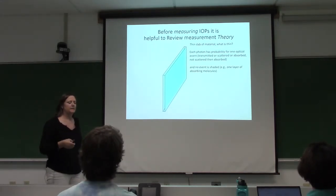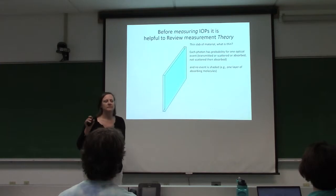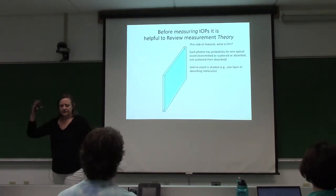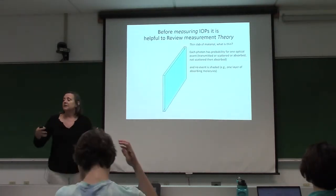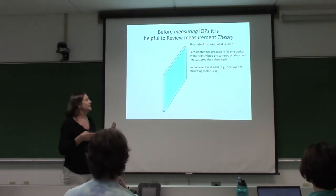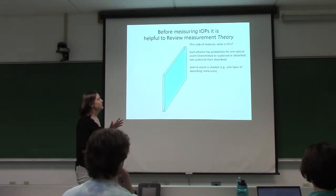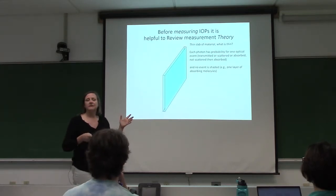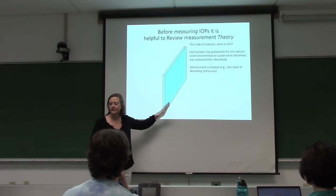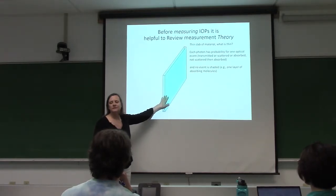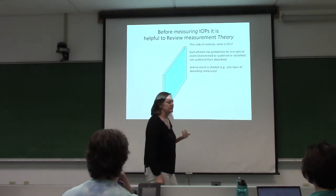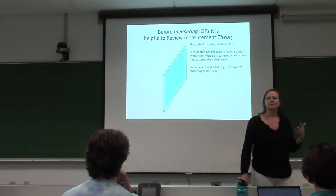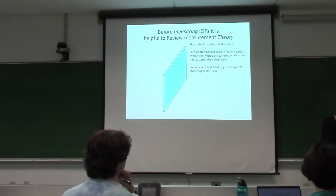We talked yesterday about what absorption means at that molecular level in terms of electronic states and vibrational states. But now let's move bigger to where we have some material comprised of a bunch of molecules. We want to consider a thin slab of this material. When you think about thin, because we're going to be talking about derivatives, everything is infinitesimally small when you get to the limit of thickness.